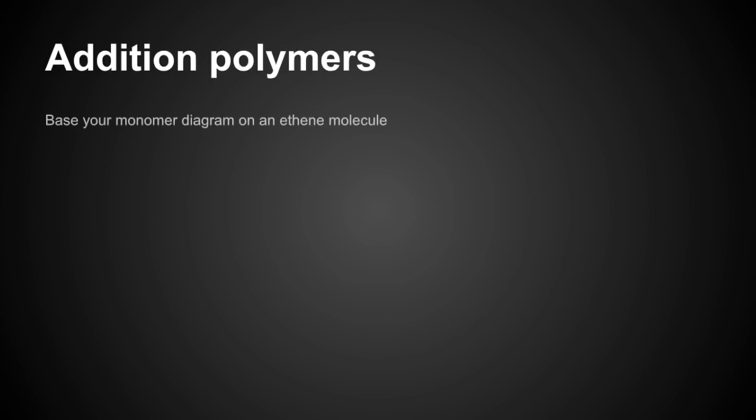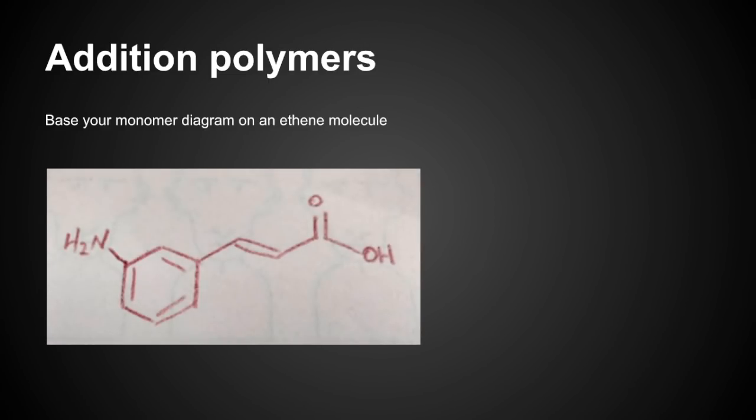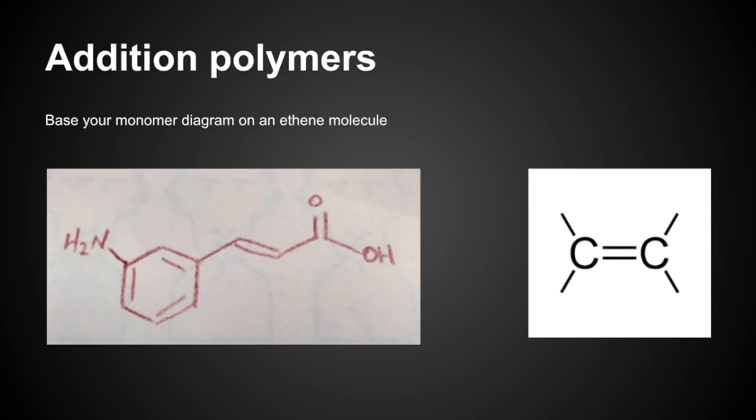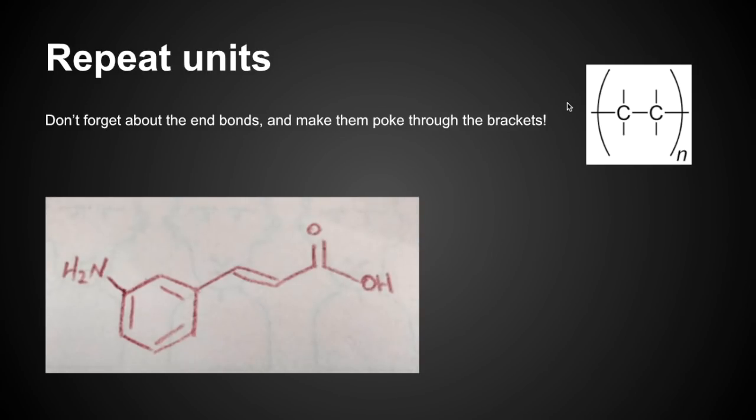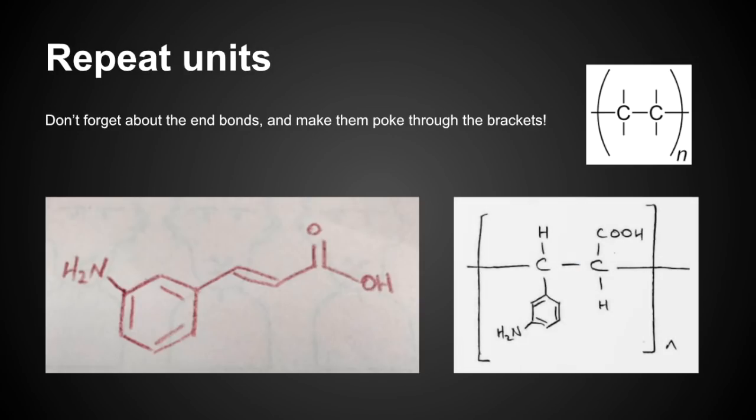We'll move on to addition polymers. Top tip is to base your monomer diagram on an ethene molecule. If you're faced with something like that, and you've got to construct the repeat unit diagram, if you base it on that ethene structure, these two carbons here are those two there. We've got a hydrogen here, this aromatic group here, this carboxylic acid group here, and another hydrogen there. Then once it's in that format, you can quite easily turn it into the repeat unit. Top tip for repeat units is don't forget about the end bonds. Make sure they poke through the brackets. We're going to turn that ethene-like structure into something like that. Those bonds there must poke through the bracket.